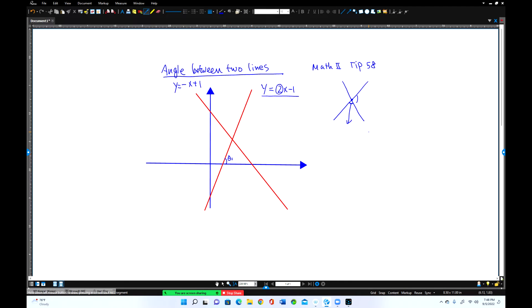So you know tangent theta, tangent theta is opposite over adjacent, which is equal to slope. So you can see that tangent theta 1 equals 2. That's true.